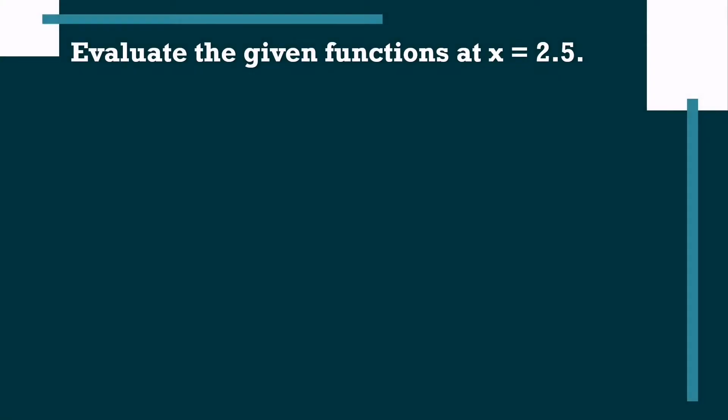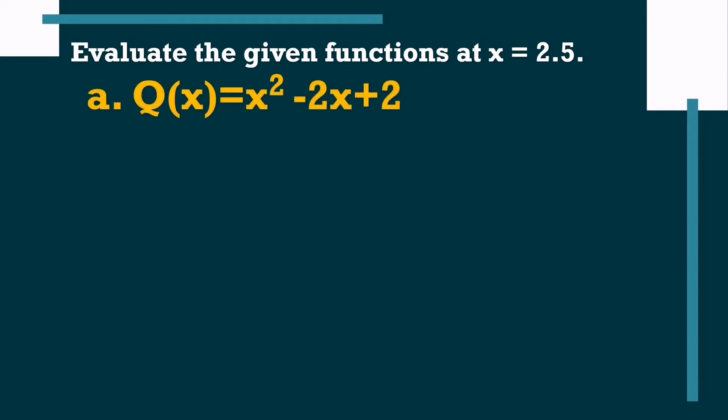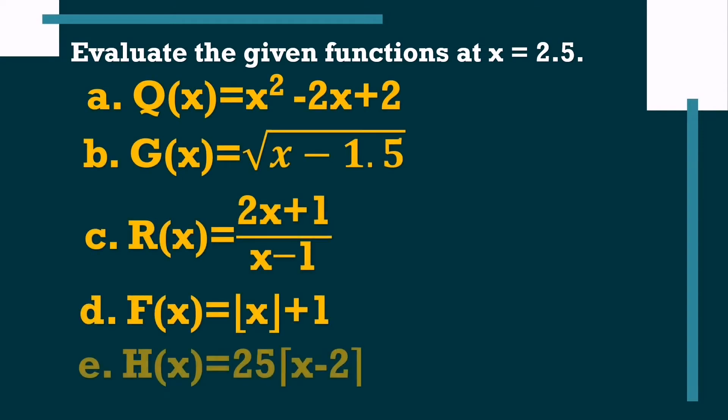Let's have more examples. We will evaluate the following functions at x equals 2.5. We have 5 functions. Let's evaluate first: q(x) equals x squared minus 2x plus 2 at x equals 2.5.